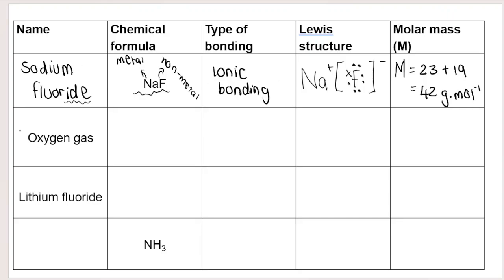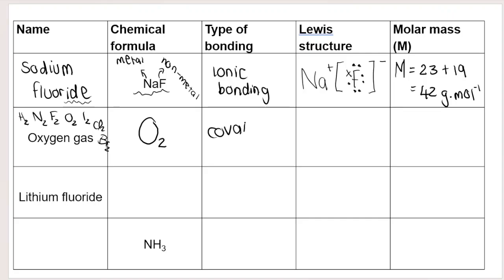Row one of the table is complete. Let's move on to oxygen gas. Oxygen gas is one of our diatomic molecules — 'have no fear of ice cold beer' is a silly rhyme to remember the diatomic molecules: hydrogen, nitrogen, fluorine, oxygen, iodine, chlorine, and bromine. The chemical formula for oxygen is O₂ — it's a diatomic element. The type of bonding: oxygen bonded to oxygen is non-metal with non-metal, so that is covalent bonding.